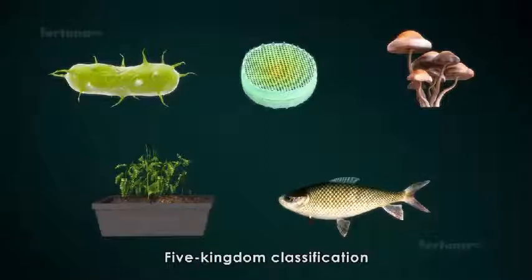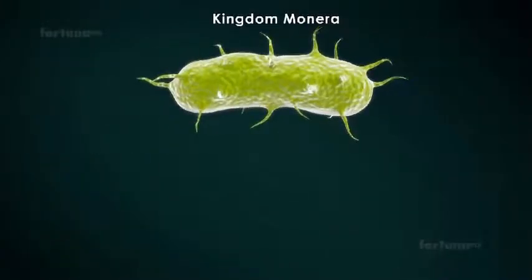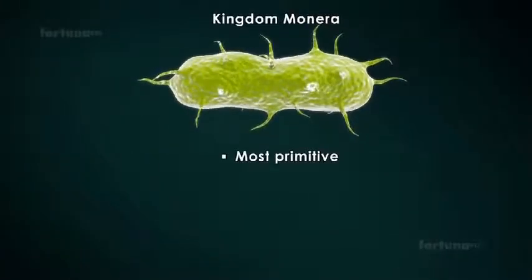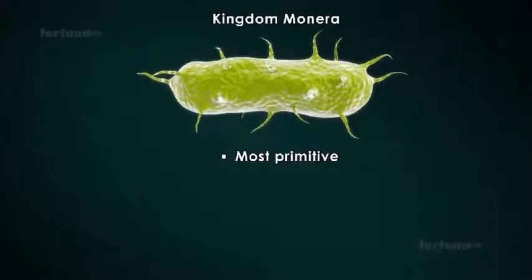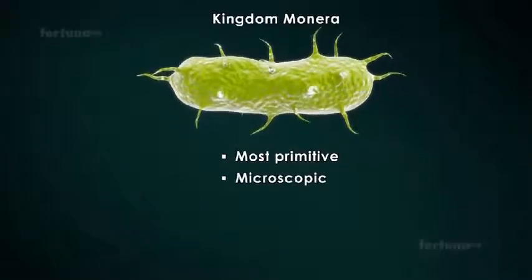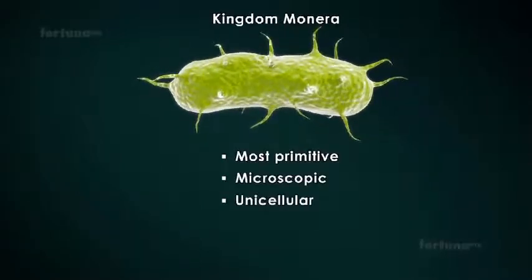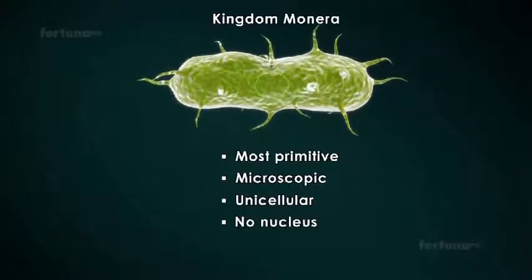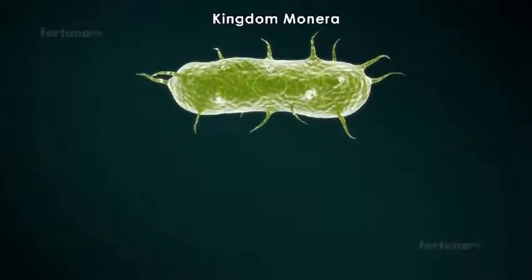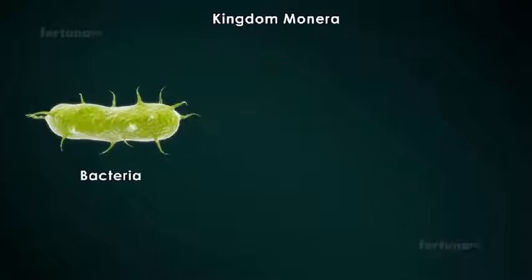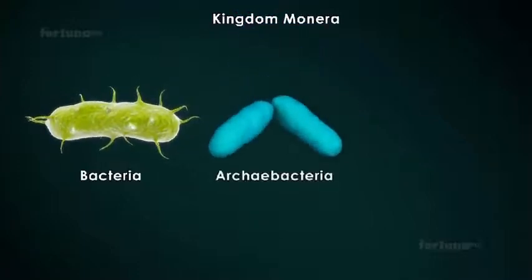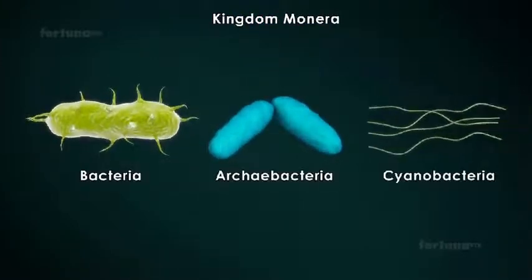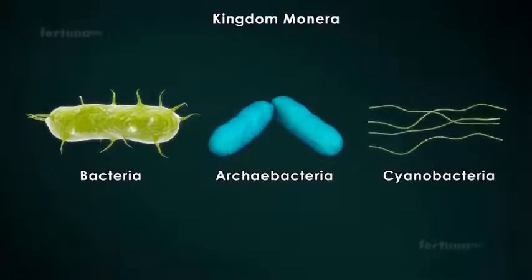Kingdom Monera consists of the most primitive life forms found on Earth. These organisms are usually microscopic and unicellular, meaning they are single-celled. They have no nucleus within their cytoplasm. Bacteria, Archaebacteria, and Cyanobacteria are all members of Kingdom Monera.